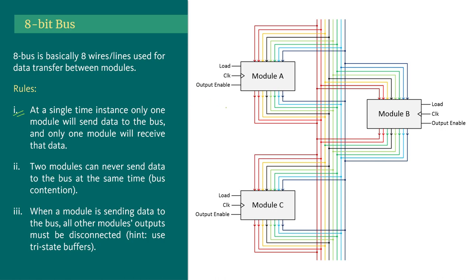At a certain time instance, in our design with modules A, B, and C, only one module will send data and only one module will receive that data. Two modules can never send data to the bus at the same time — this is called bus contention. Let me explain this problem.